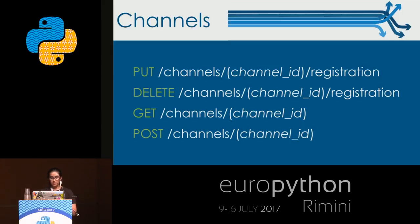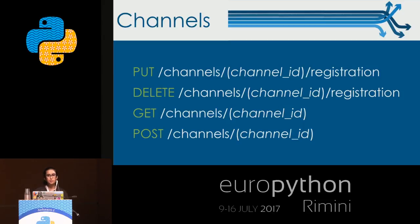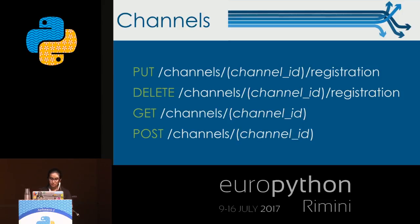The channels endpoint works as follows: to register a new channel, even if it does not exist already, you can use PUT /channel/{channel_id}/registration and add any new channel ID. To delete a channel, use DELETE /channel/{channel_id}/registration. To get information about a channel — such as how many users have registered or how many times information has been pushed — use GET /channel/{channel_id}.